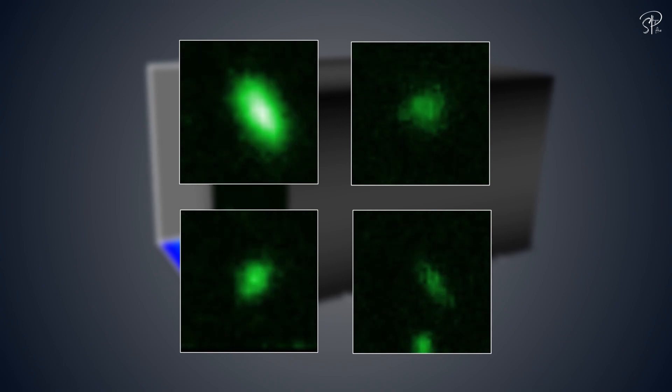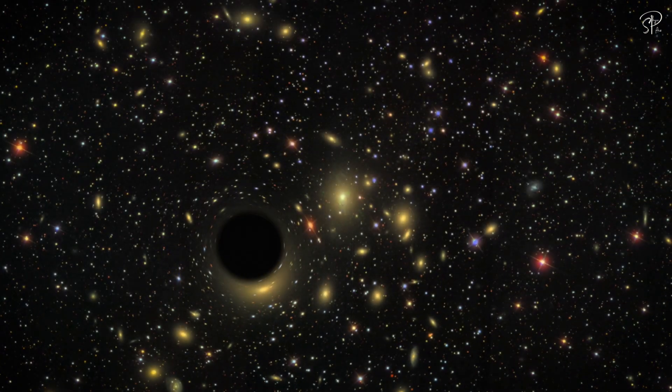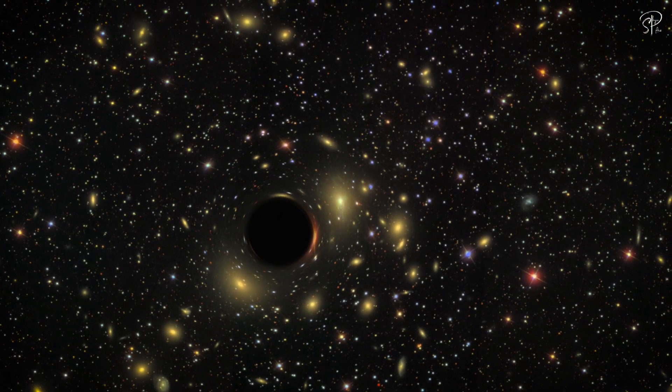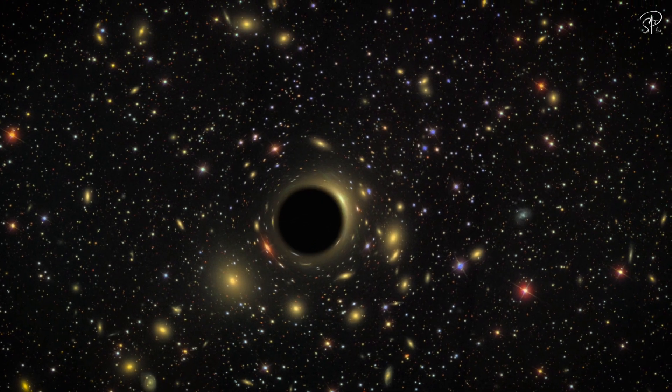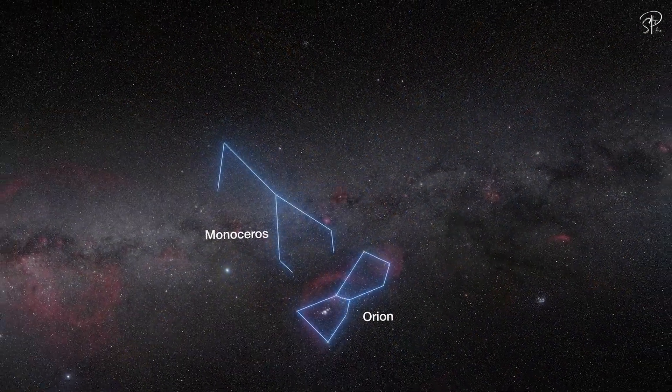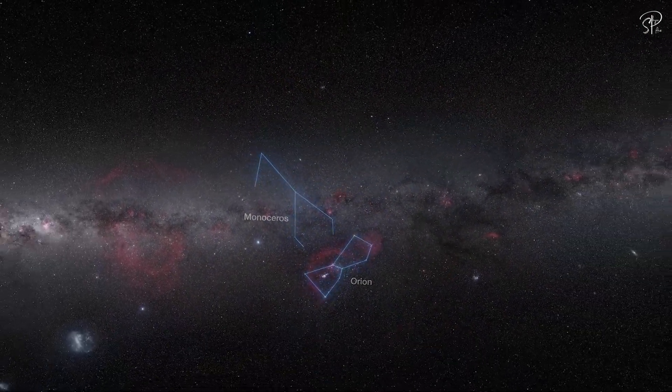In some cases, stars can even become black holes without even creating a supernova, thus disappearing from our view directly. This might be possible for one of the stars, but all three of them? How can all three of them just become a black hole all at once?